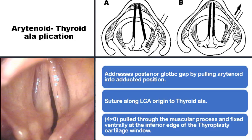The procedure used most commonly for arytenoid adduction is the arytenoid rotation procedure. This entails rotating the arytenoid into the adducted position by mimicking the action of the major arytenoid adductor, the lateral cricoarytenoid muscle. A needle is passed into the muscular process of the arytenoid and pulled along the fibers of the lateral cricoarytenoid, either through the thyroid ala in the original description by Isshiki, or around the cricoid in the modified version, mimicking the action of the lateral cricoarytenoid to adduct the arytenoid and help close a posterior glottic gap.